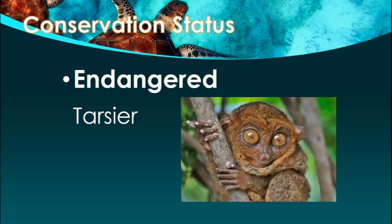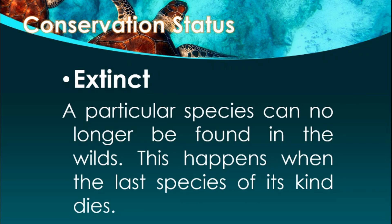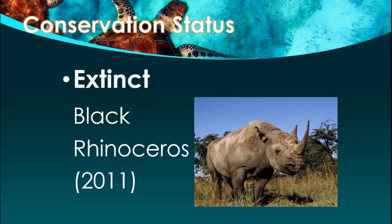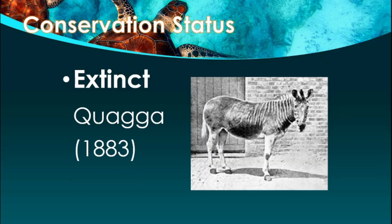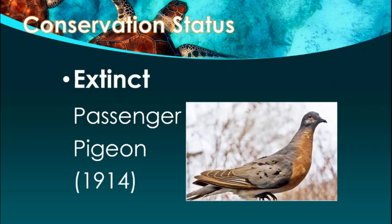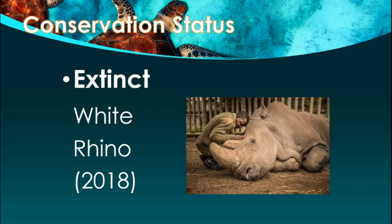Let us now go to the last classification, which is extinct. When you say extinct, a particular species can no longer be found in the wild. This happens when the last individual of its kind dies. Examples include the black rhinoceros which became extinct in 2011, the Tasmanian tiger which became extinct in 1936, the quagga which became extinct in 1883, the passenger pigeon which became extinct in 1914, and the white rhinoceros, the last of which died in 2018.